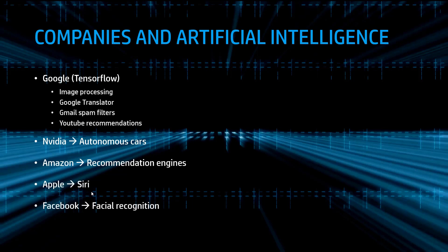These are, for me, the most important companies. Google, whose library of artificial intelligence is TensorFlow, does image processing, Google Translator, Gmail spam filters with artificial intelligence, and recommendations for every application. Then we have NVIDIA, which is investing heavily in autonomous cars. Amazon has recommendation engines. Apple has Siri, and Siri and Cortana and Google Assistant also use artificial intelligence. And also image processing, for example, facial recognition.